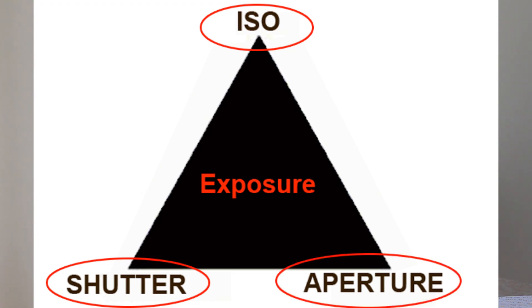And third, aperture — or how big will we make the hole for the light to enter? All of these functions can be adjusted to get just the right amount of light into the camera for proper exposure. Now these exposures can be done solely by the camera, or we can do some of them or all of them ourselves. Each of these three functions has a totally different effect on our image, and it's important that we learn and understand what those effects are.